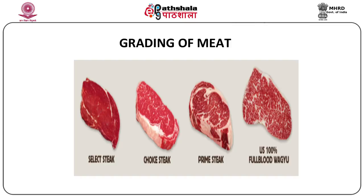You can see a steak in the different grades: the select steak, the choice steak, and the prime steak. The last picture is the full blood Wagyu. Wagyu in Japan means a cow — it is the Japanese beef cattle. One interesting aspect of full blood Wagyu beef is that this species of cow is not cross-bred with other animals, and it has a distinct layer of marbling that gives this meat its unique tenderness and juiciness.